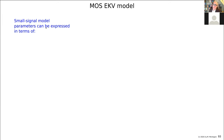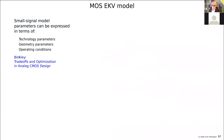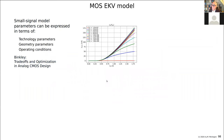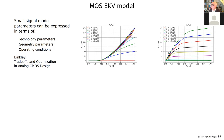The small signal parameters of the model can be expressed in terms of technology parameters, geometry parameters, and operating conditions. This is discussed in a book by David Binkley: 'Tradeoffs and Optimization in Analog CMOS Design,' which will be available in the library. Here you can see the plots as implemented in SLiCAP: the drain-source current as a function of gate-source voltage with drain voltage stepping, showing the linear region, the saturation region, and the channel length modulation effect — rather than a flat horizontal line, there is a slight upward slope due to CLM.